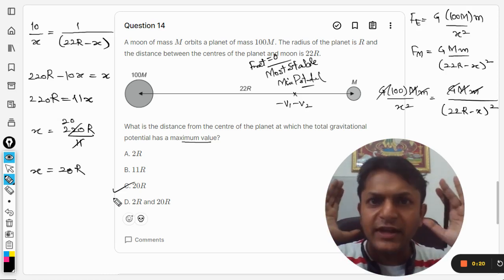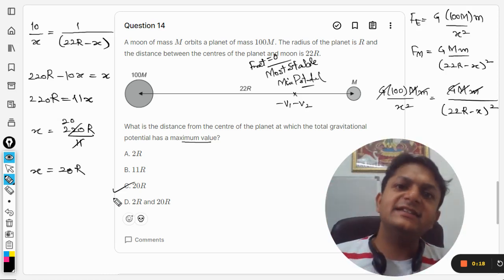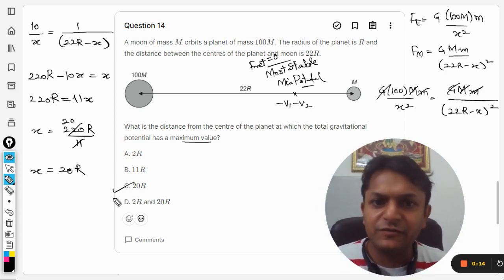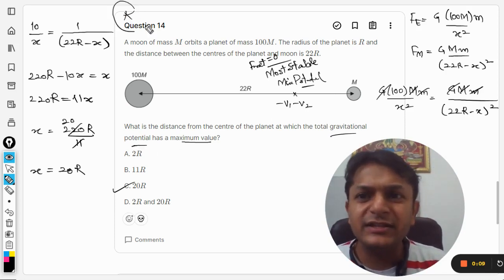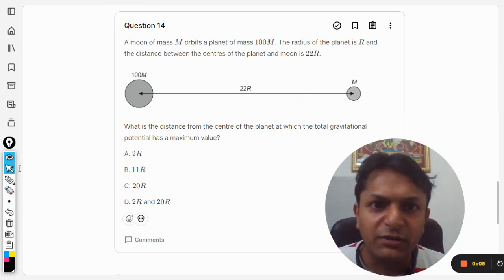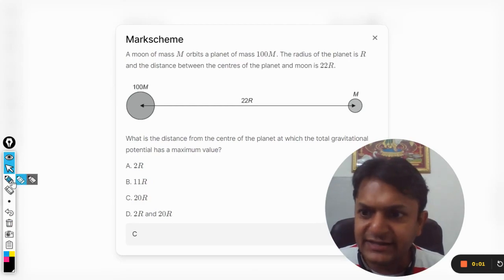Clearly the answer that we get is C. This is how we do this and this is the quickest possible method in which we have to solve it. We are not going to find any gravitational potential. Mind it students, this is a very important question and let me show you the answer given in the mark scheme. Is it C or not? Well yes, the answer clearly.